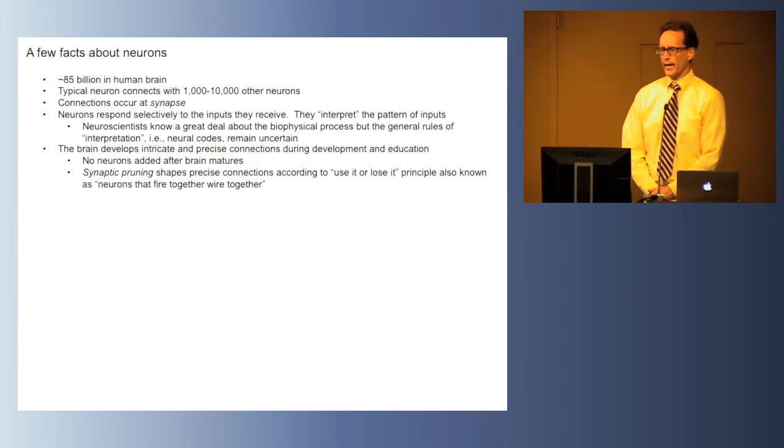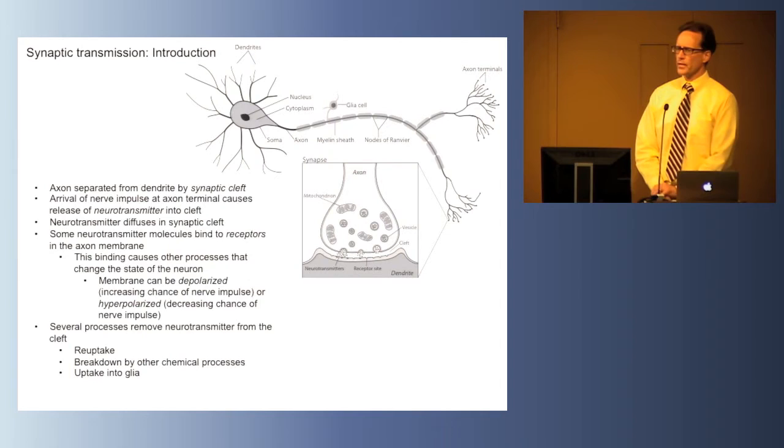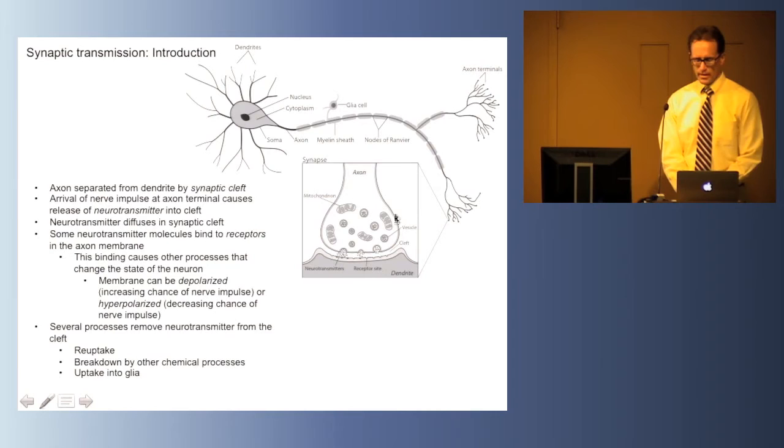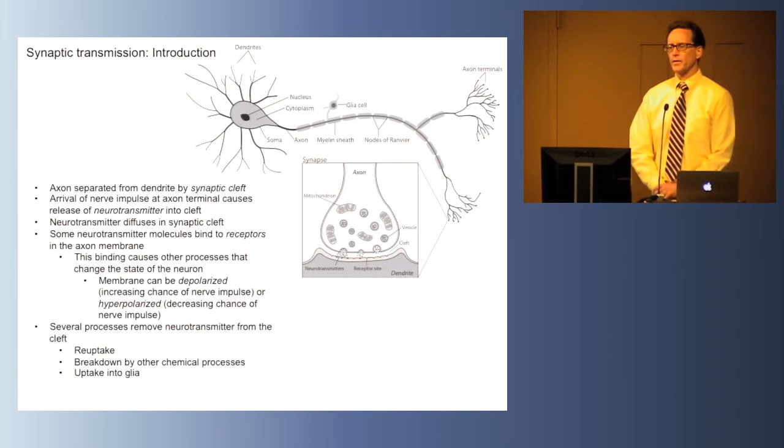Neurons that fire together wire together. Let me explain synaptic transmission. This is a very superficial overview. Textbooks are written on this. You can find a great deal more information, but this should give you enough background to interpret the information that will be involved in the rest of this course. This is a diagram of the synapse. This is the axon coming in to form a connection with the dendrite of another cell. The scale of this is at an electron microscope level, beyond the ability to see under a light microscope.